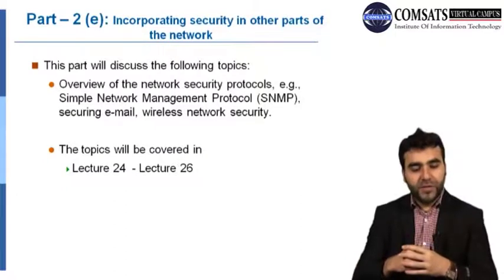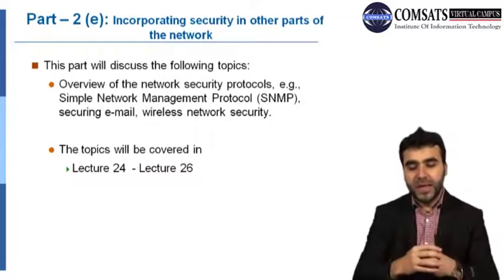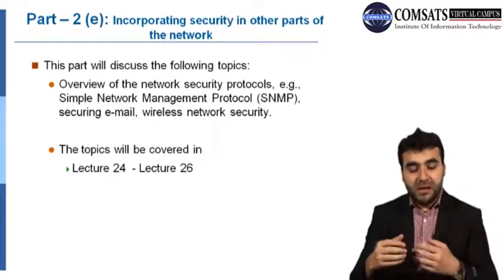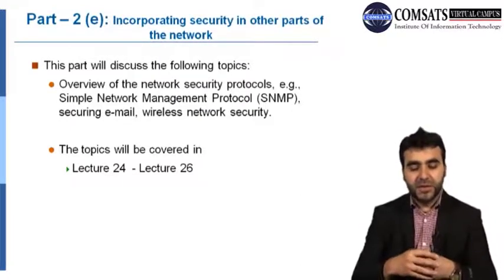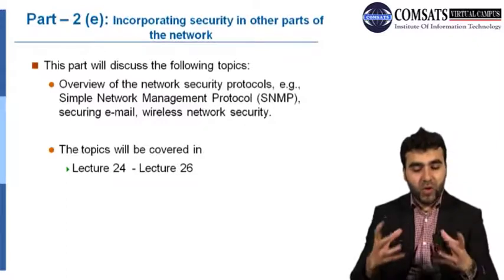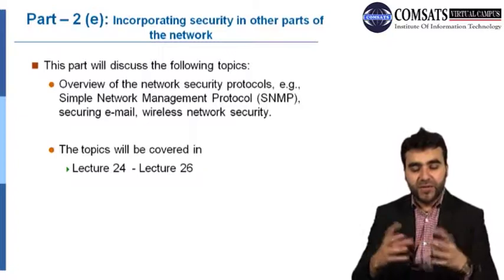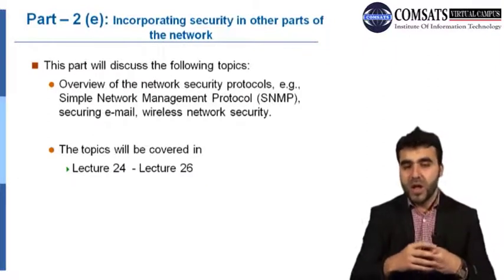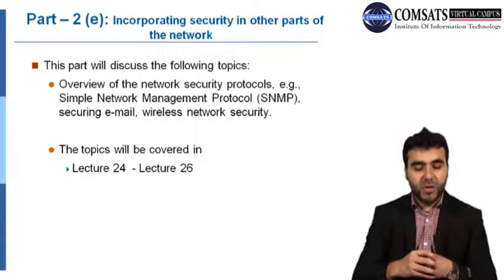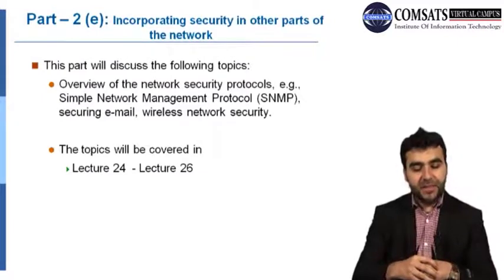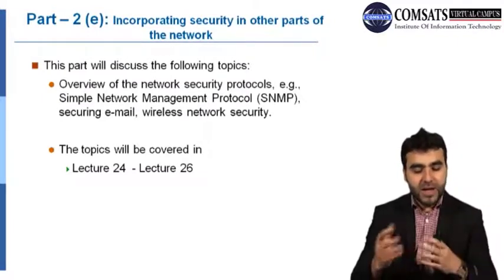The last part of Part 2 is incorporating security in other parts of the network. A network is comprised of different subdomains and different areas — for example, wireless. You can think of how wireless networks could be made secure and how different types of security protocols could be used. Some examples like SNMP, Simple Network Management Protocol, and some other protocols will also be discussed in this particular subsection. These topics will be covered in lectures 24 to 26.